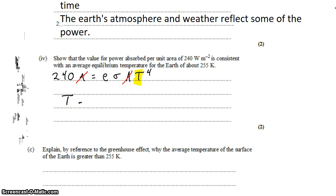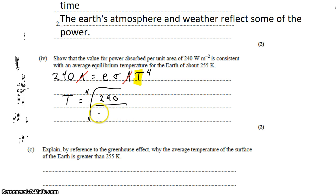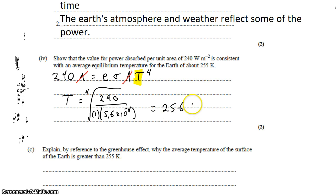Solving for temperature gives the fourth root of 240 divided by emissivity times the Stefan-Boltzmann constant. We're not given the emissivity of the Earth, so we assume it equals 1. Dividing by 1 times 5.6 times 10 to the negative 8 gives 256 Kelvin. Note that it's 256 Kelvin, not 256 degrees Kelvin — Kelvin is not a degreed unit.